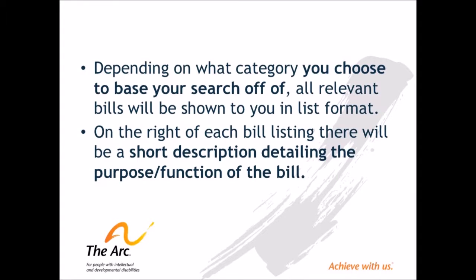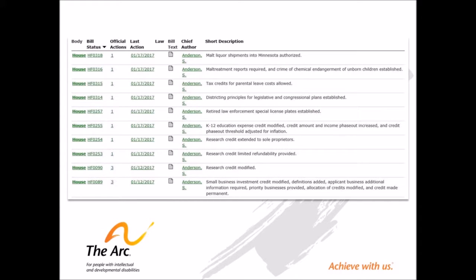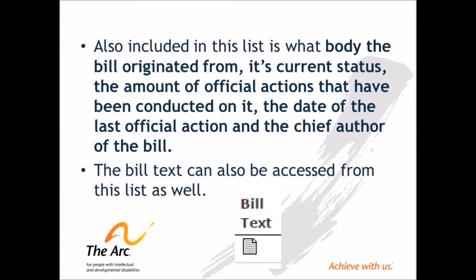Depending on what category you choose to base your search off of, all relevant bills will be shown to you in list format. On the right of each bill listing, there will be a short description detailing the purpose or function of the bill. Also included in this list is what body the bill originated from, its current status, the amount of official actions that have been conducted on it, the date of the last official action, and the chief author of the bill. The bill text can also be accessed from this list as well.